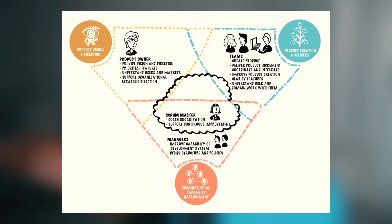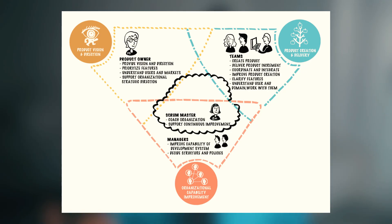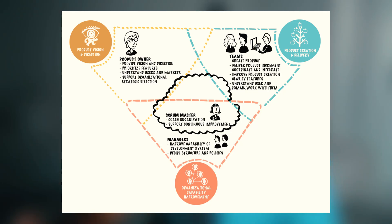Let's go through this simple image broken down into three sections. Top left: product vision and direction — that's the product owner. Then there's product creation and delivery — the teams. And the bottom section: organizational capability and improvement — that's the managers. There's also a new role: Scrum master, which we already know, but managers are introduced as new.